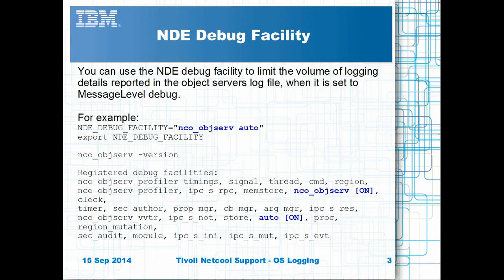By default, the debug logs are 60% repeat in internal logging. The NDE Debug Facility allows the volume of log messages to be reduced to specific components within the Object Server. The environment setting can be set to the minimal setting nco-obj-serve auto within the installation user's environment or in the nco-obj-serve.env file.